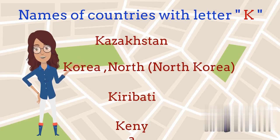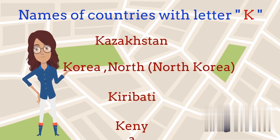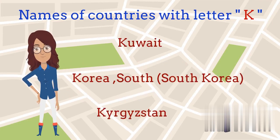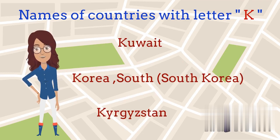Names of countries that start with letter K: Kazakhstan, North Korea, Kenya, Kiribati, Kuwait, South Korea, Kyrgyzstan.